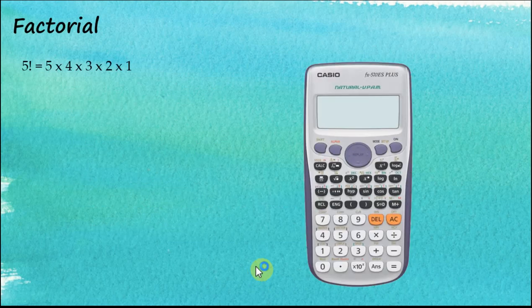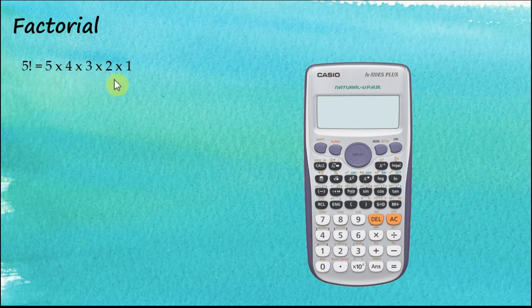The Casio fx-570ES Plus calculator allows us to find the factorial, permutations, and combinations of numbers. Let's start with the factorial. For example, 5 factorial equals 5 times 4 times 3 times 2 times 1, and the factorial button is located on the calculator.